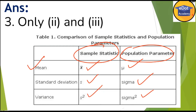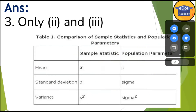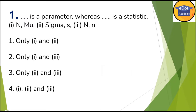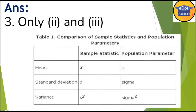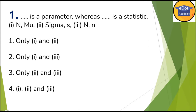Now I think this concept is clear. Here's a hint: whenever we use Greek alphabet characters, we always assign them to the population, whereas for sample we use x-bar, s, and similar notations. So the answer here — parameter is always the Greek alphabet sigma, while s is the sample statistic. The only exception is the number of terms: capital N for population parameter and small n for sample. So the correct option is option three.